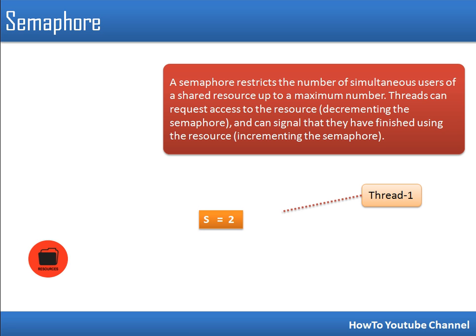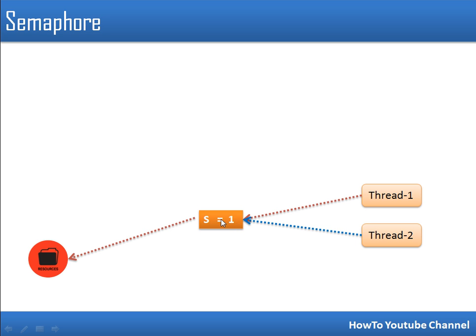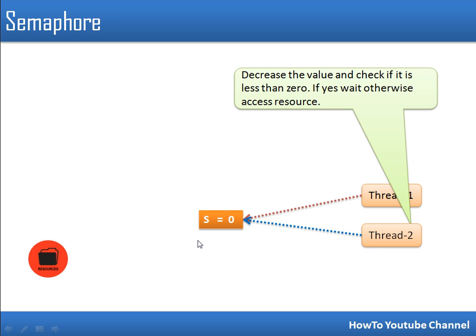Now let's see the same example with semaphore. The semaphore has a variable s with value 2, specifying how many threads can simultaneously access the resource. Whenever a thread tries to access a shared resource, it first decrements the value of the semaphore. After decrementing, if the value is less than 0, the thread has to wait. Thread one decrements s to 1 — not less than 0, so access is allowed. Thread two decrements s to 0 — also not less than 0, so thread two also gets access.